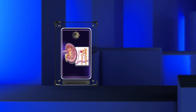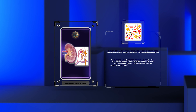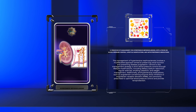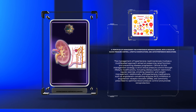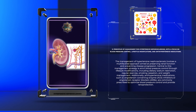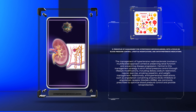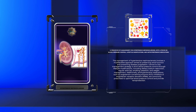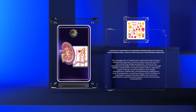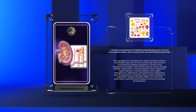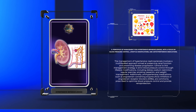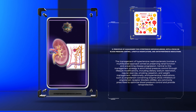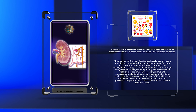The management of hypertensive nephrosclerosis involves a multifaceted approach aimed at preserving renal function and preventing disease progression. Central to this strategy is strict blood pressure control through lifestyle modifications, including dietary sodium restriction, regular exercise, smoking cessation, and weight management. Additionally, antihypertensive medications such as angiotensin-converting enzyme (ACE) inhibitors or angiotensin receptor blockers (ARBs) are commonly prescribed to optimize blood pressure control and provide renal protection.